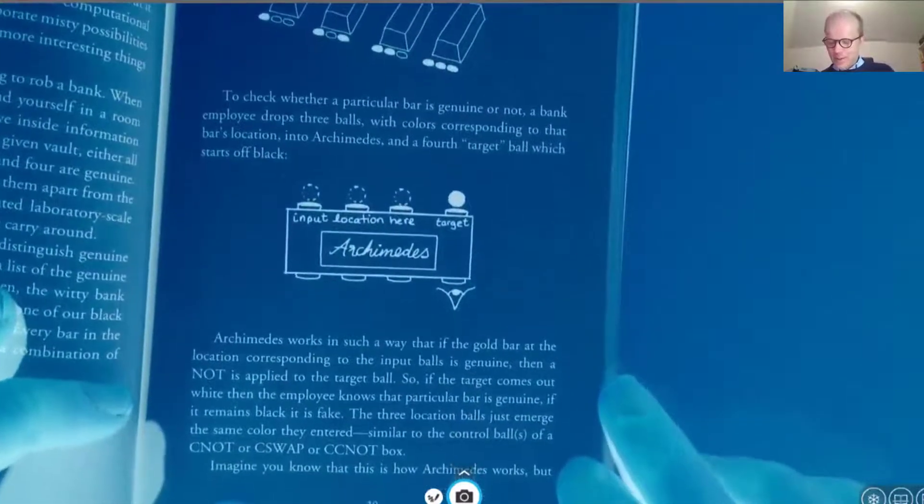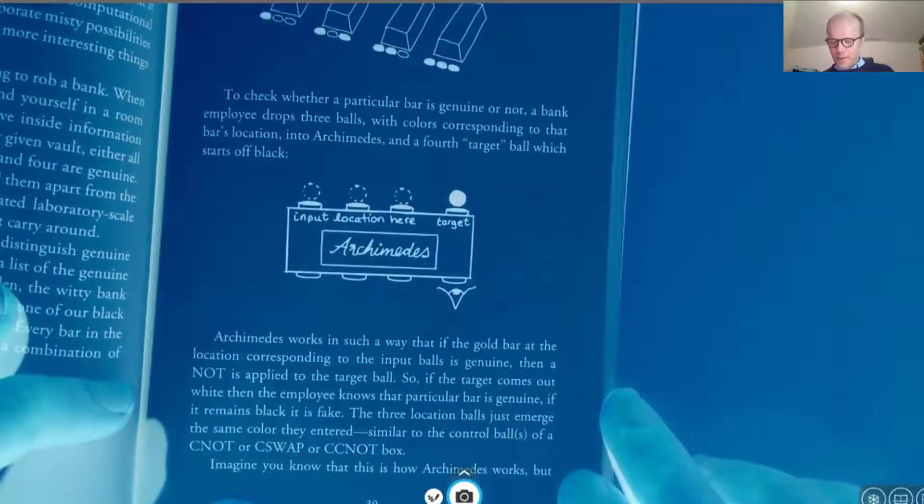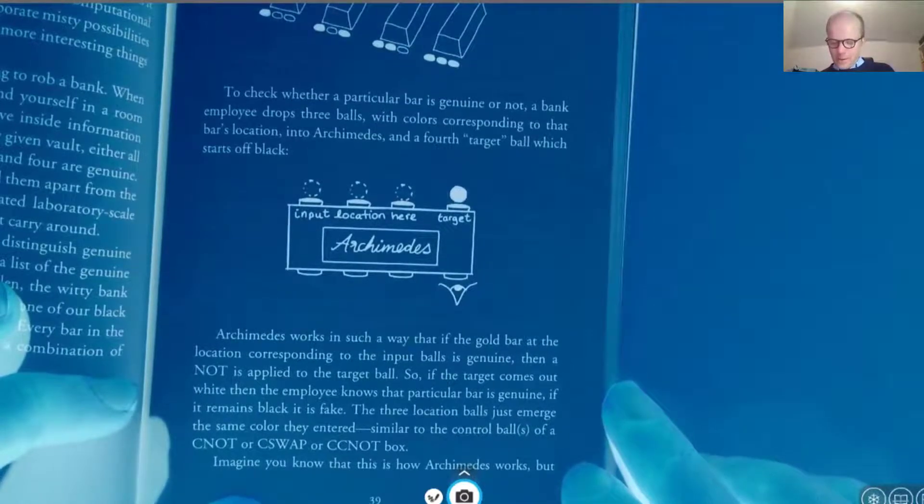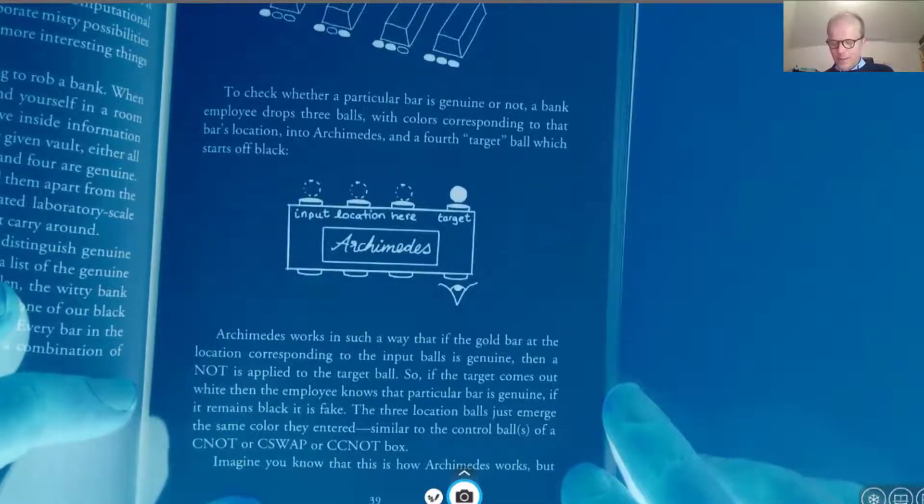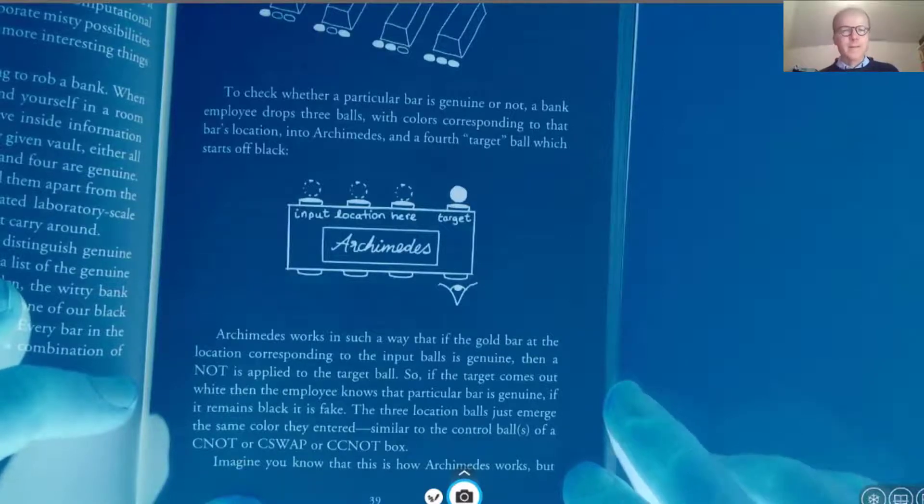Archimedes works in such a way that if the gold bar at the location corresponding to the input balls is genuine, then a knot is applied to the target ball. So if the target comes out white, then the employee knows that particular bar is genuine if it remains black, it is fake. The three locations balls just emerge the same color they entered. And so on.